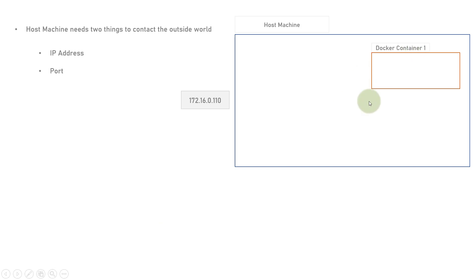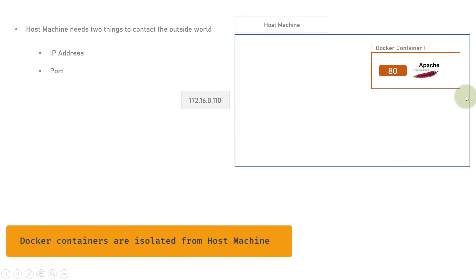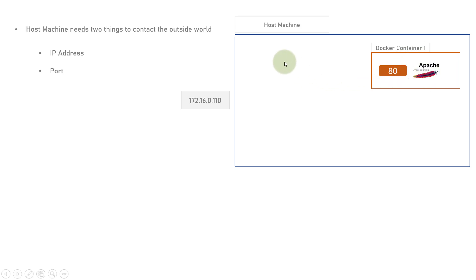Let's say there is a Docker container running inside the host machine — Docker container 1 — which is running Apache HTTP server on port 80. This Apache HTTP server application is running inside the Docker container, so it is isolated from the host machine. Only people who are inside Docker container 1 can access this Apache web server. It is not exposed to the outside world because it is isolated from the host machine.